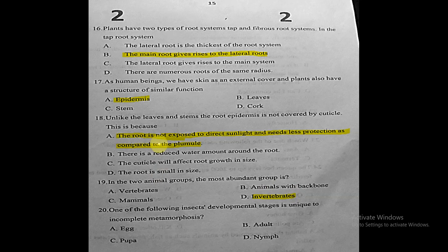Question twenty: one of the following insect development stages is unique to incomplete metamorphosis. The correct answer is the nymph stage, because egg, pupa, and adult are found in complete metamorphosis, but the nymph is unique to incomplete metamorphosis.